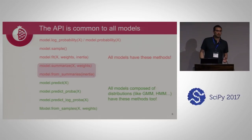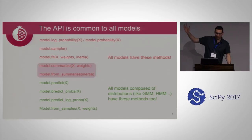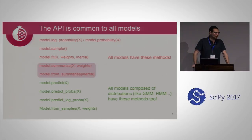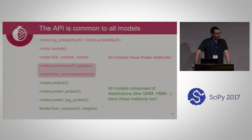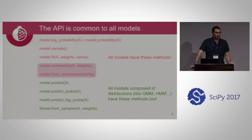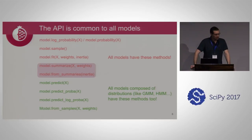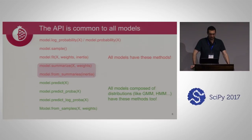Given the insight that everything is essentially just a probability distribution, the API is common to all models. Under each model, you can calculate the probability or log probability of a sequence, you can sample it since these are all generative models, and you can fit like you would in scikit-learn. The summarize and from_summaries methods support the out-of-core API. For compositional models, you have predict, predict_proba, and predict_log_proba methods from scikit-learn. There's also a model.from_samples method — an area where Pomegranate and scikit-learn differ.